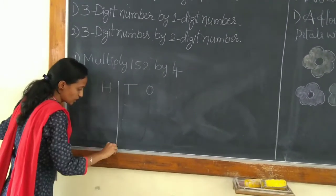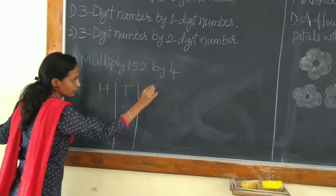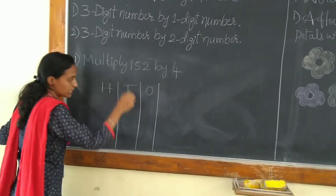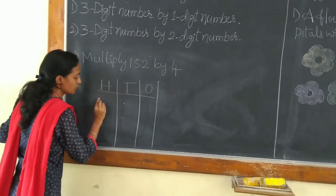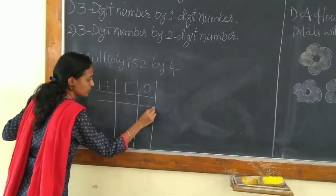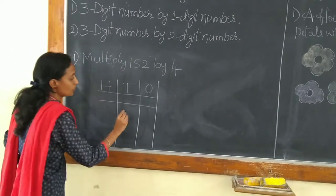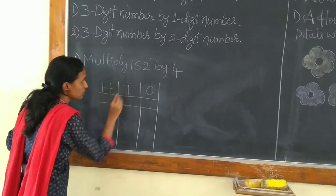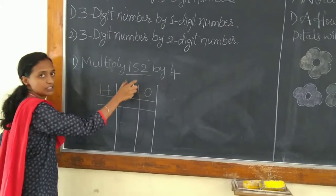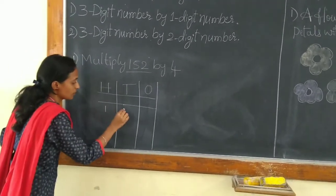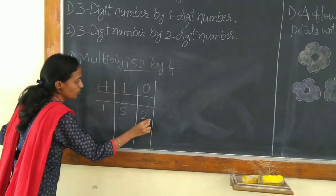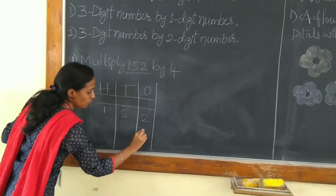First we have to draw 3 columns. The vertical lines are known as columns. The horizontal line is known as row. So we have to place the given factors or given numbers with respect to place values. 152 multiplied by 4.